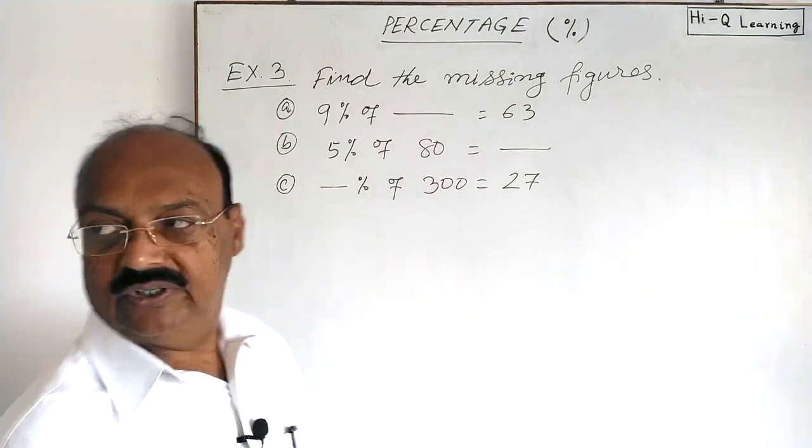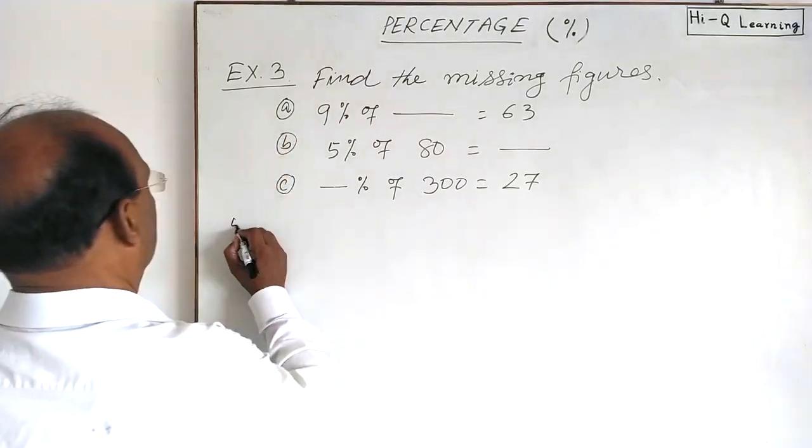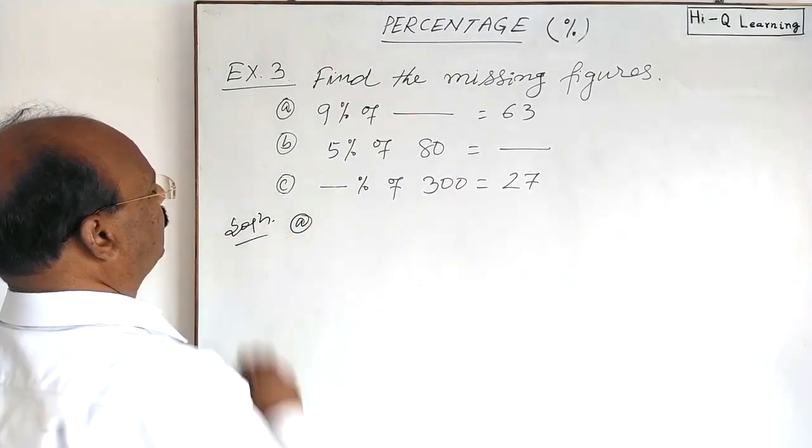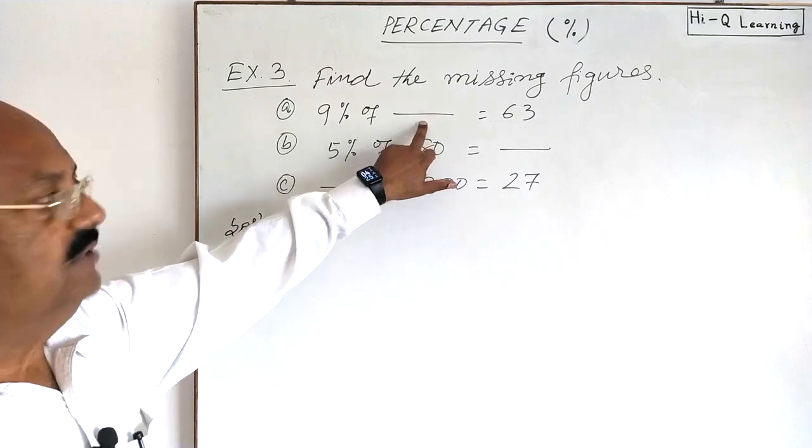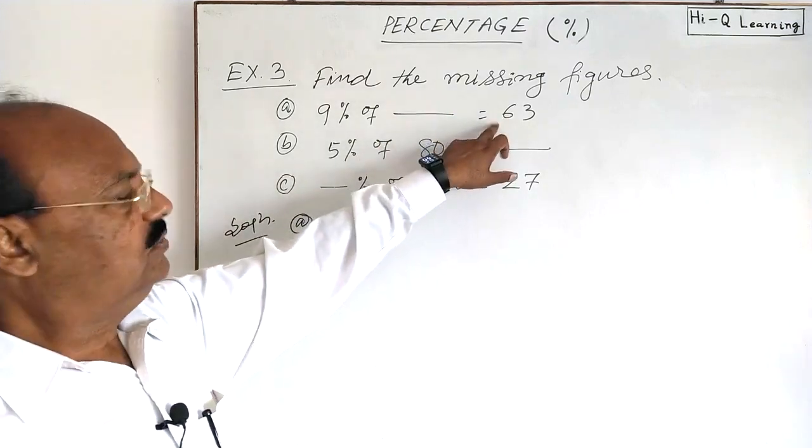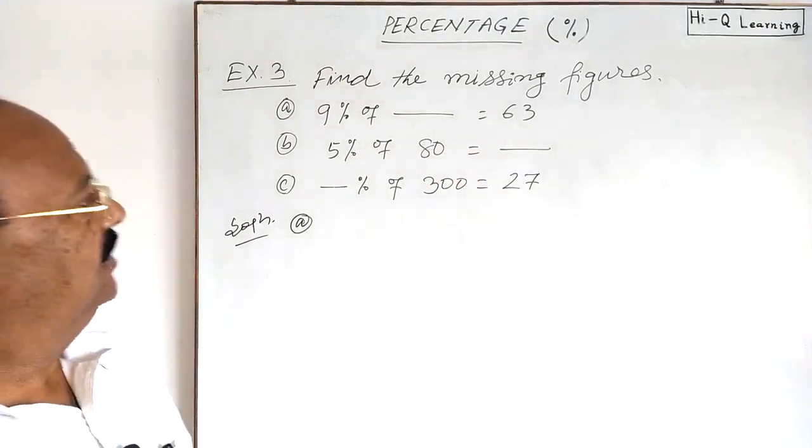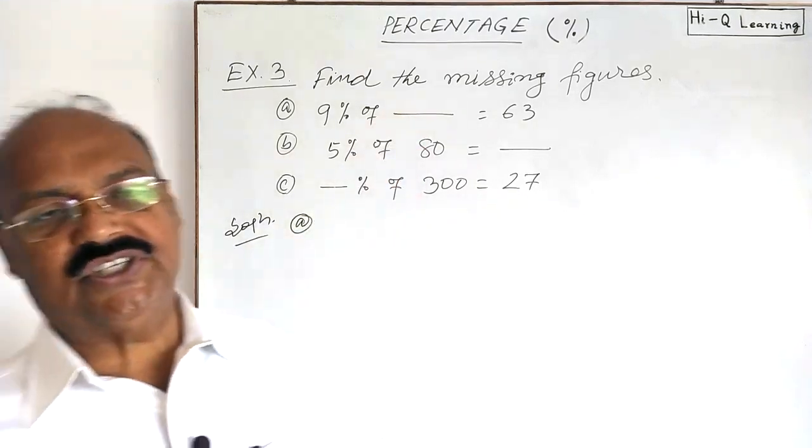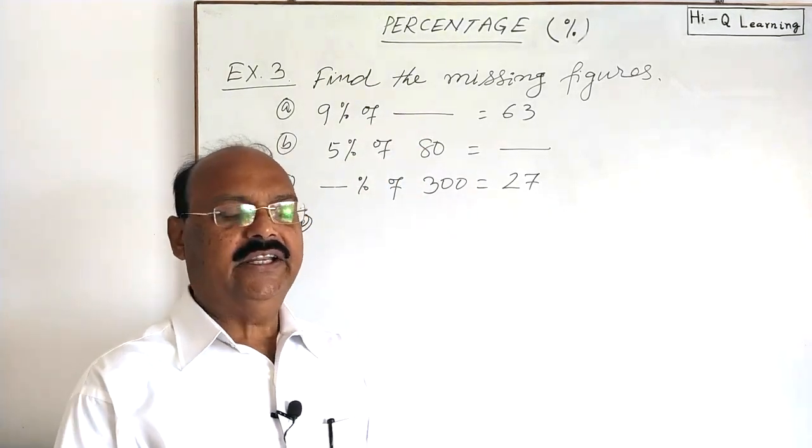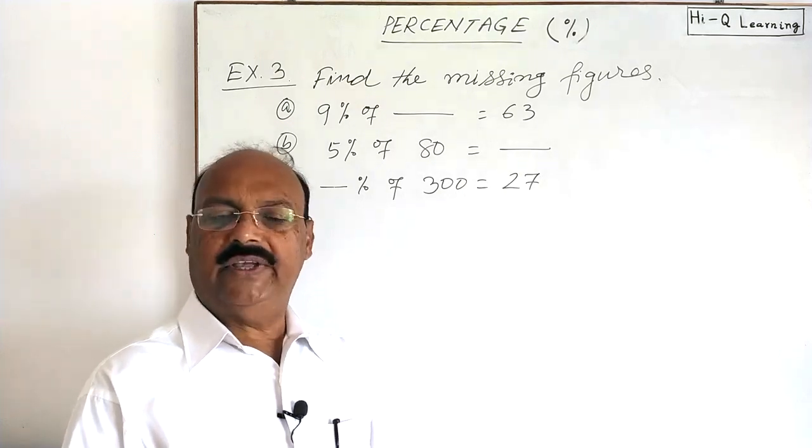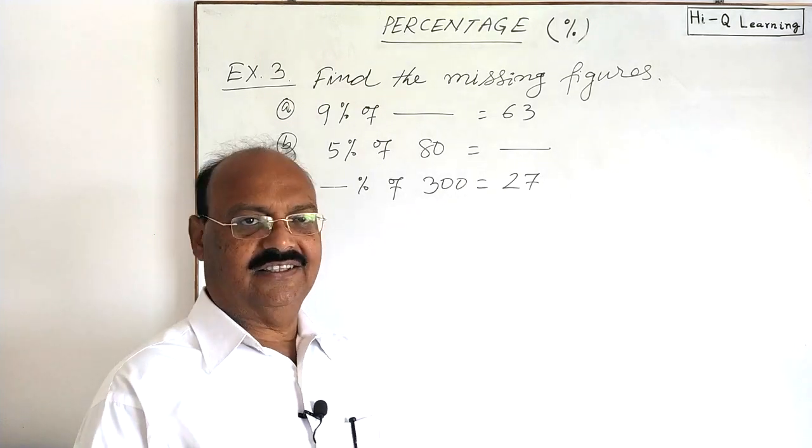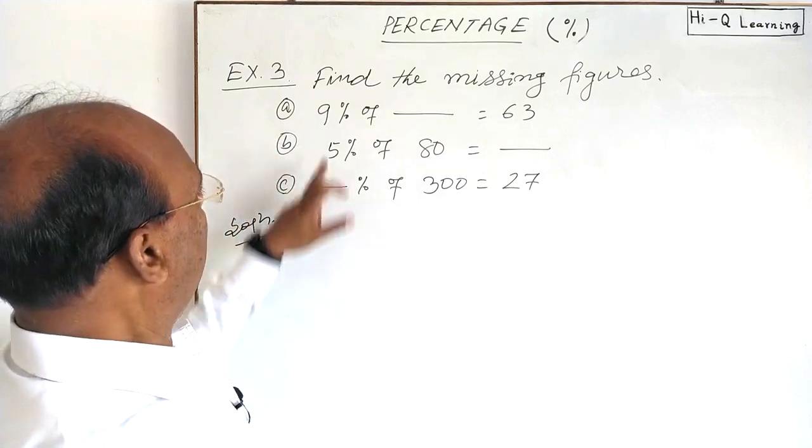Let us see the solution. First, question a: 9% of this missing figure is 63. We keep in mind that wherever the figure is missing, we'll write x there. After solving and evaluating, we'll get the value of x, which will be the answer.